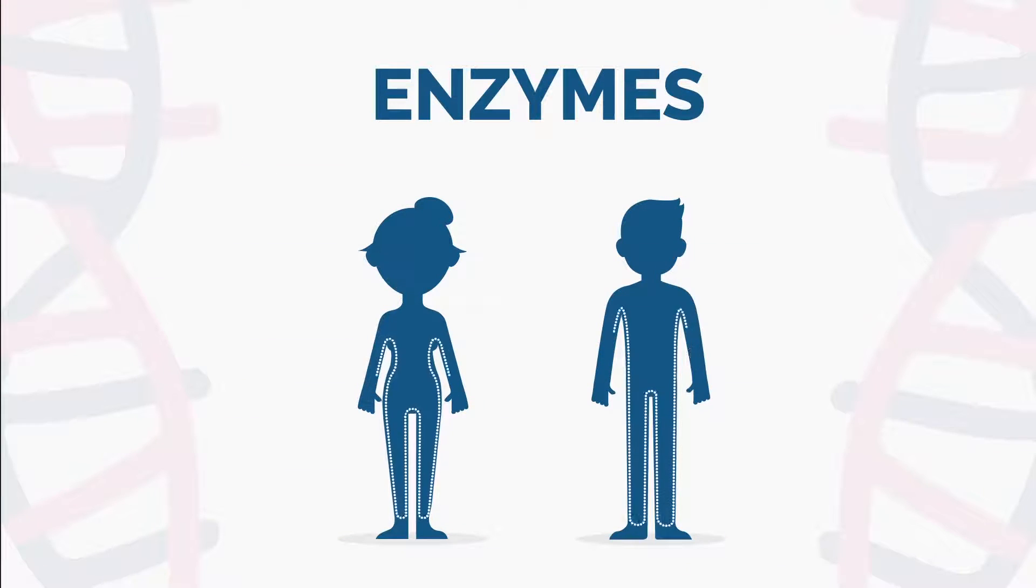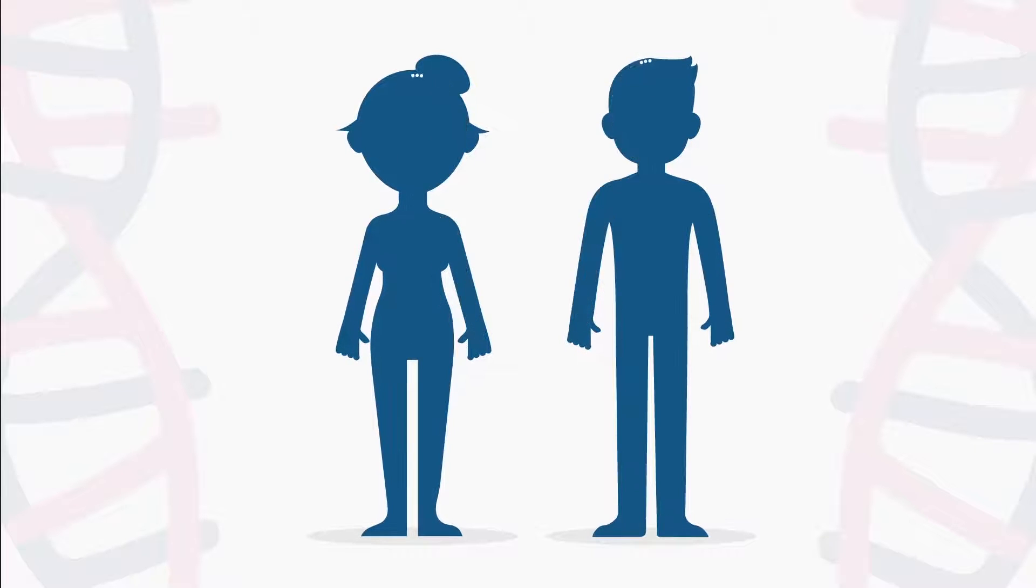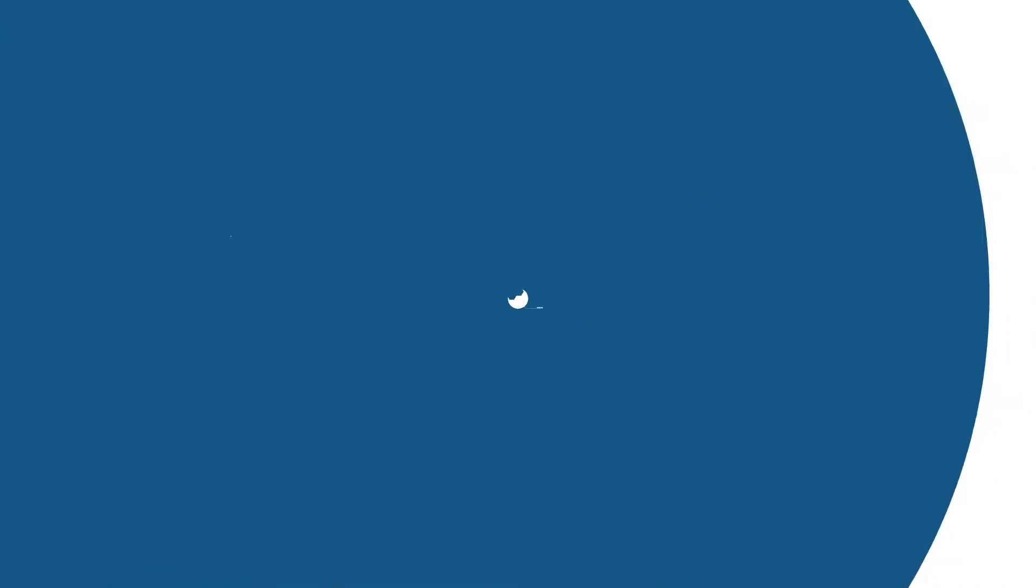Enzymes ensure that the body can function and grow. When a cell needs to get something done, it almost always uses an enzyme to speed things along.